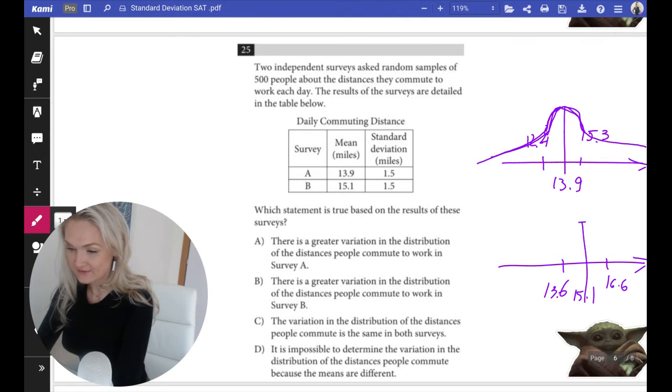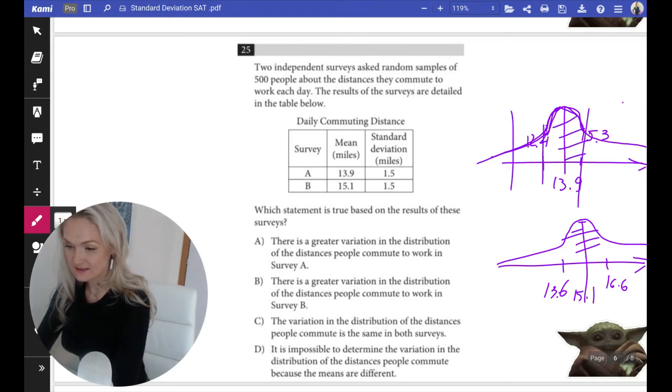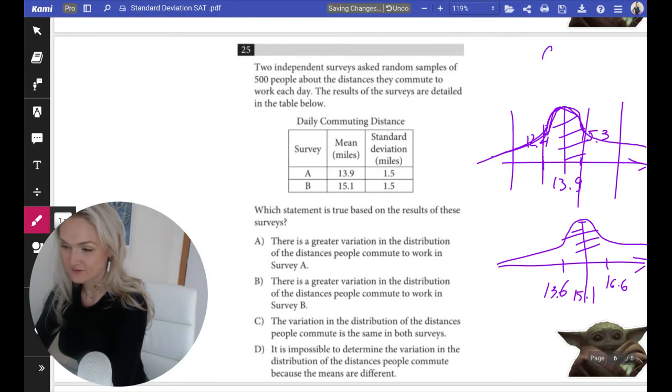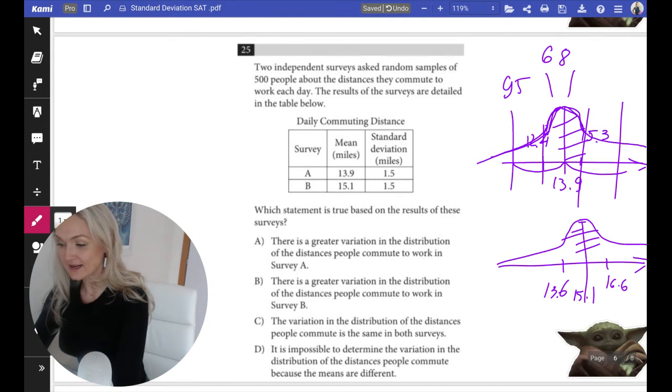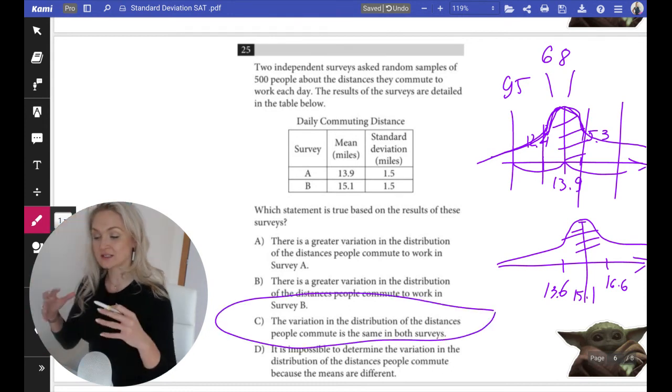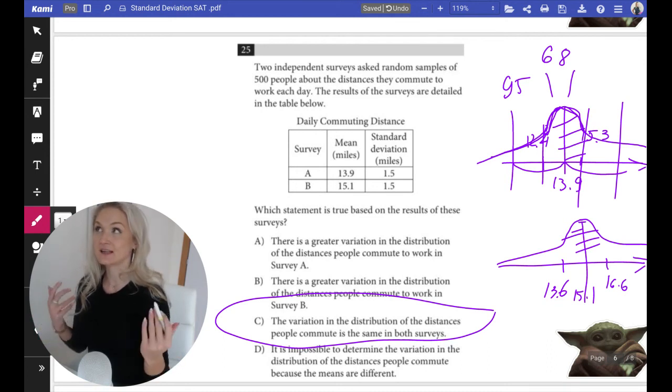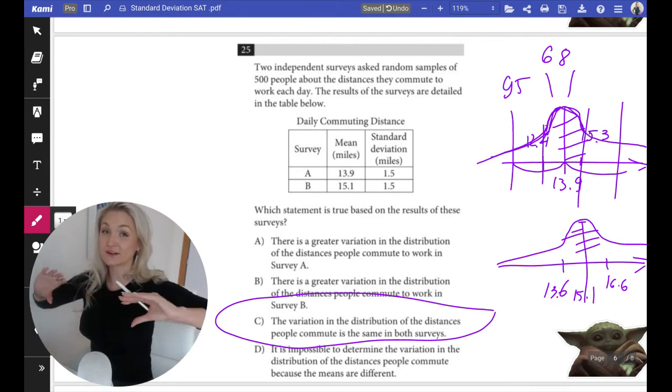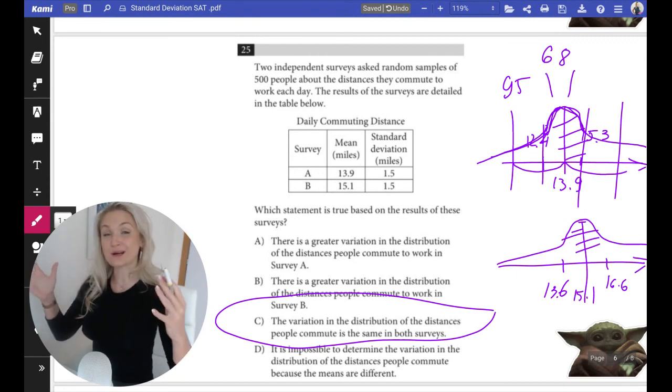The values look different, but the data is spread in the exact same way. This is 68 percent, this is 95—remember, 68 within one standard deviation, 95 within two standard deviations from the mean. The right answer is actually C, because the variation in the distribution is the same in both surveys. Yes, we start at different means, but the variation is the same.